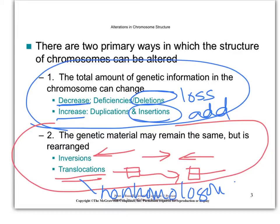What do we call a chunk of DNA going from one chromosome to another if they are homologous chromosomes? We call that crossing over.